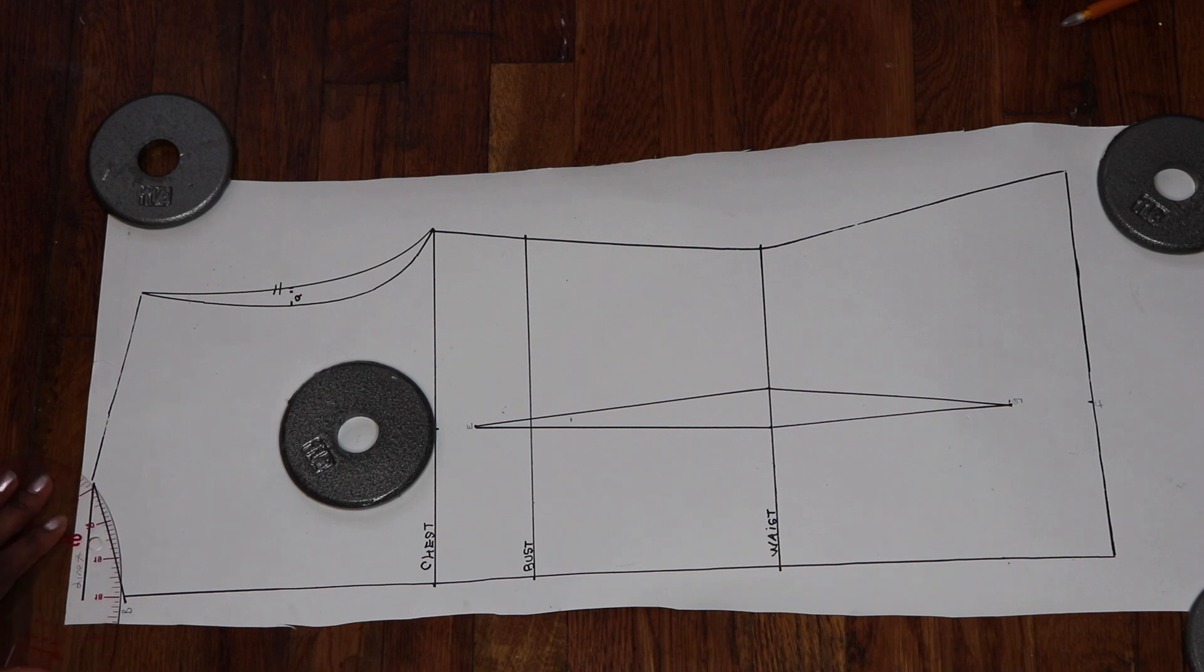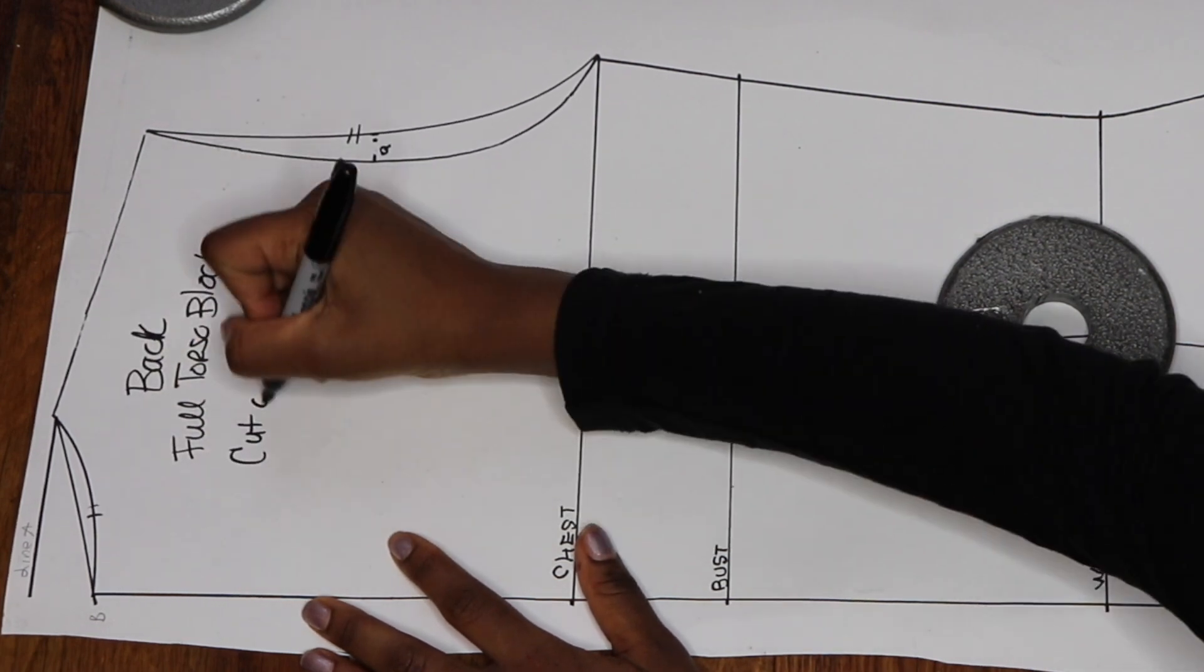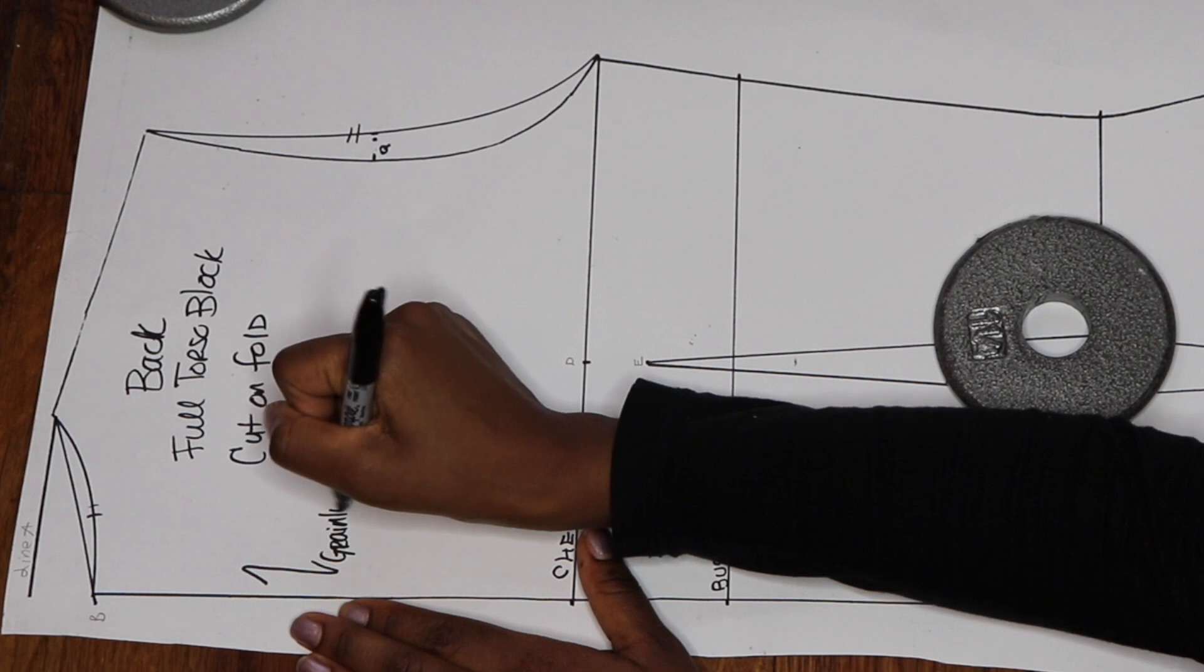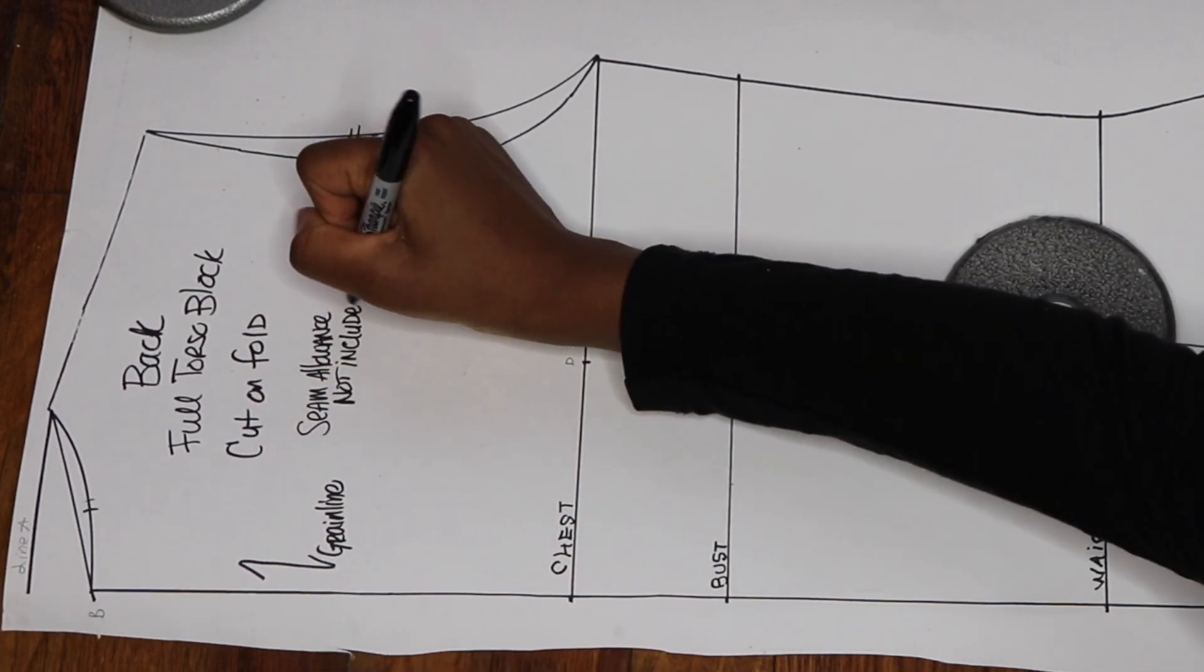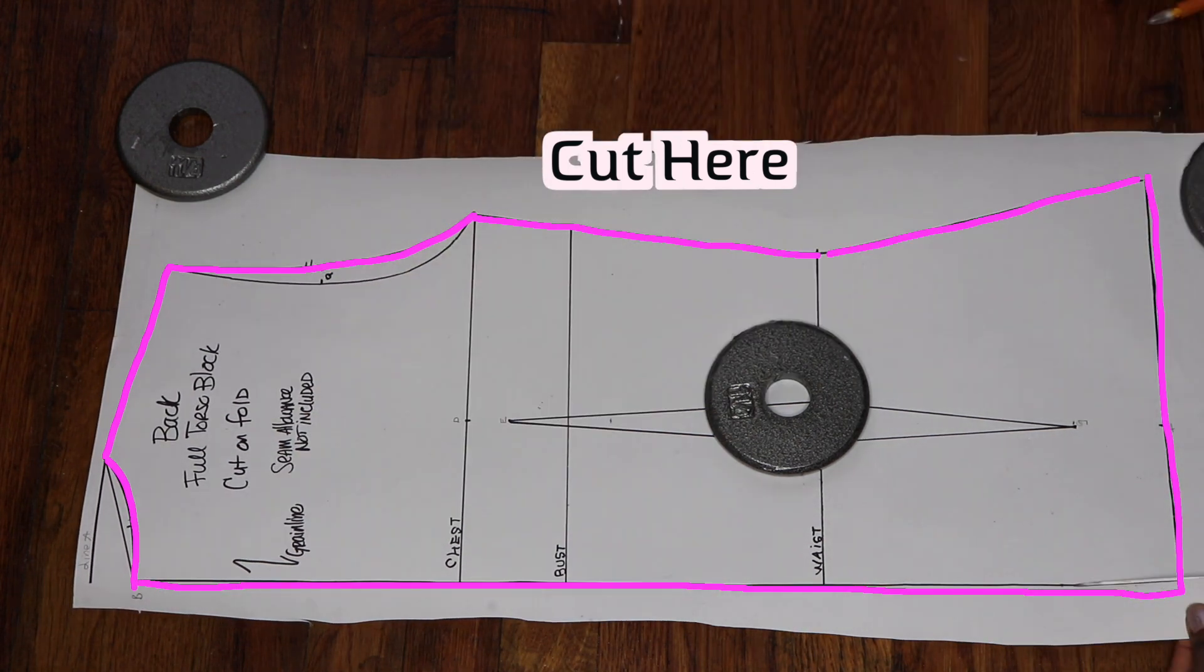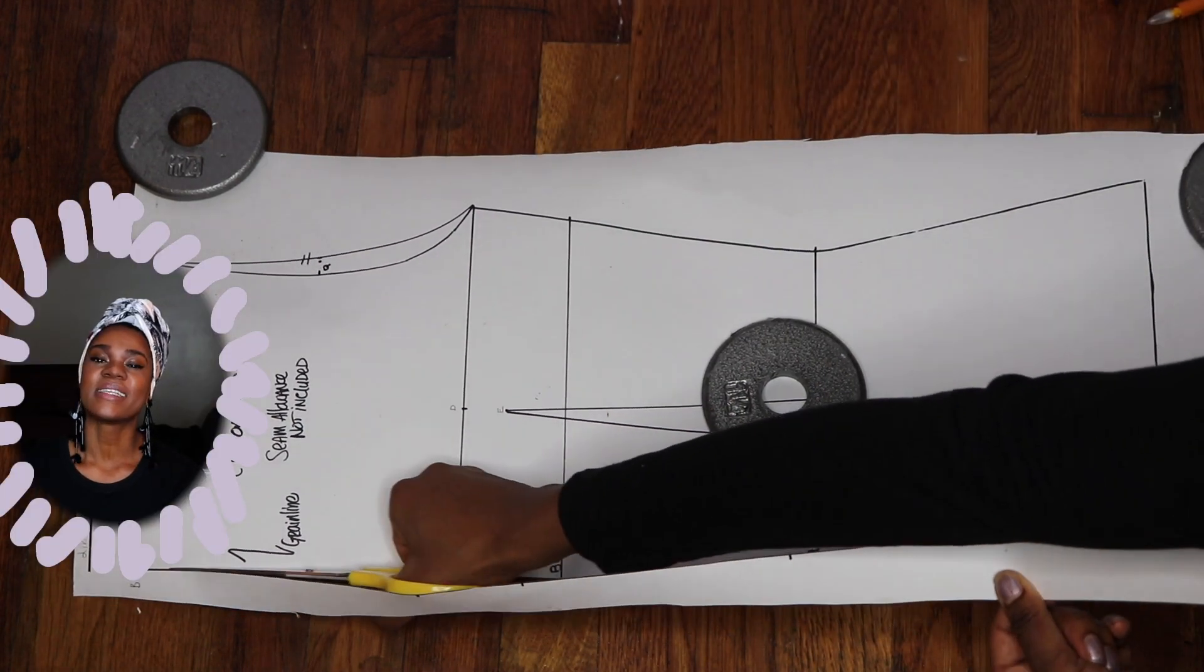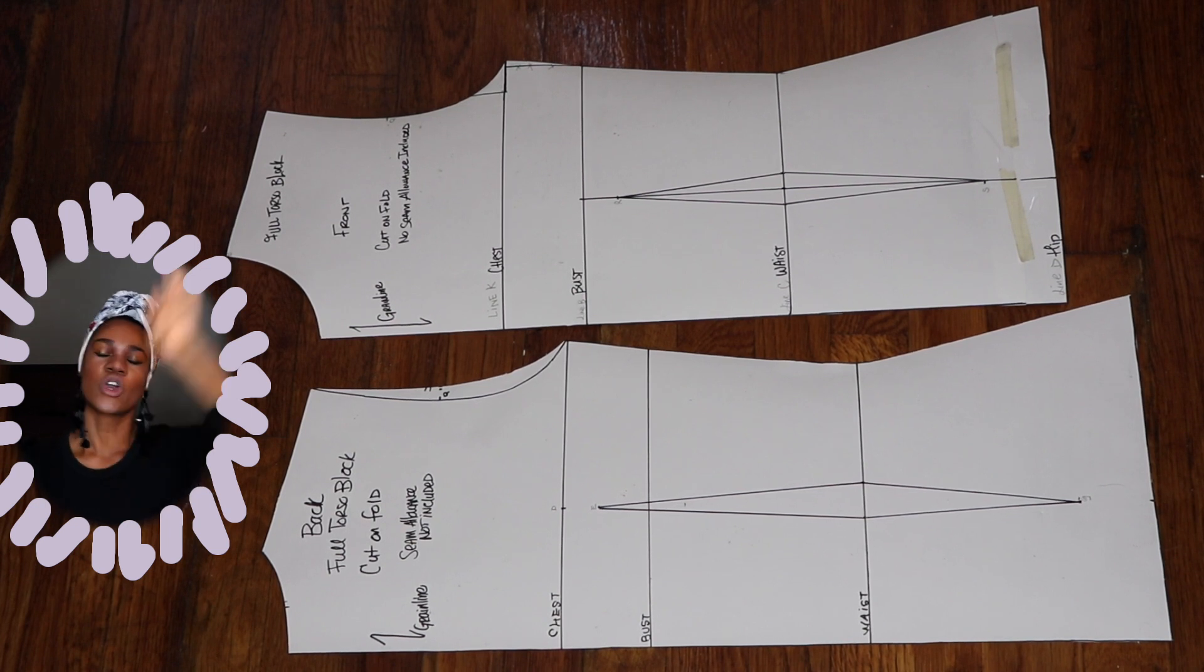And now I just went ahead and rounded out my neckline a little more and I'm just gonna title this as a full torso block and we know it's for the back and we need to cut on the folds. We have the green line and we know that there is no seam allowance and we're just gonna cut all around the pattern and that is it, we have completed our torso block. Thank you guys so much for the love and the support and I'll see you guys in the next one. Ciao.